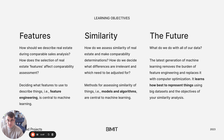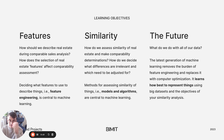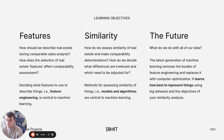How we assess similarity is also important for comps. For something like location, how close do two properties need to be in order to be considered similar? How about something like architectural style — how do we evaluate similarity there? How do we decide what differences are important and which are irrelevant, which need to be adjusted for and which can be ignored? And much like comps, methods for assessing similarity are central to machine learning.